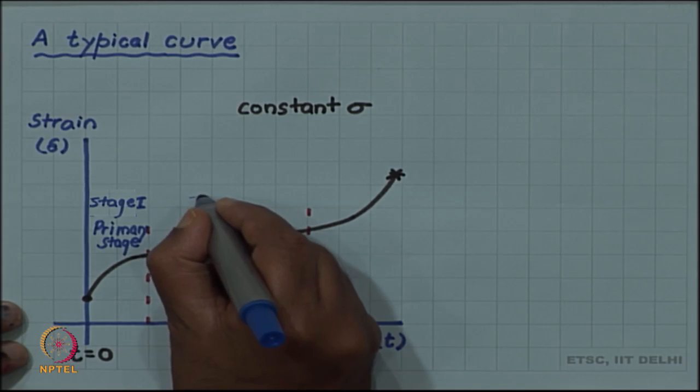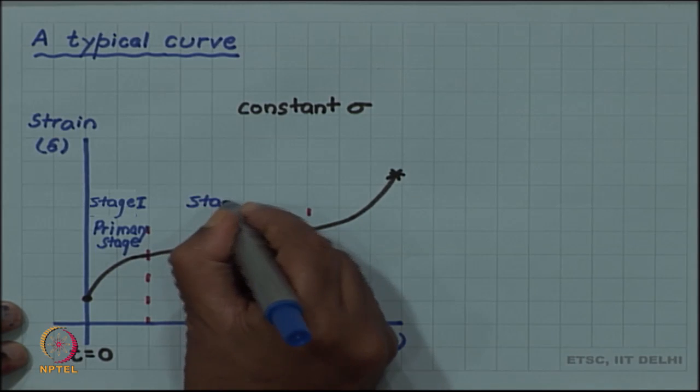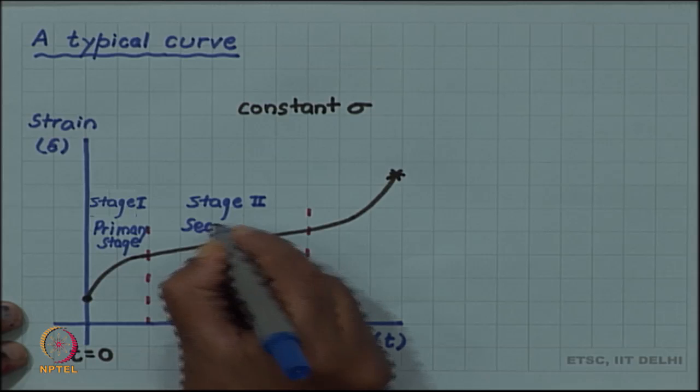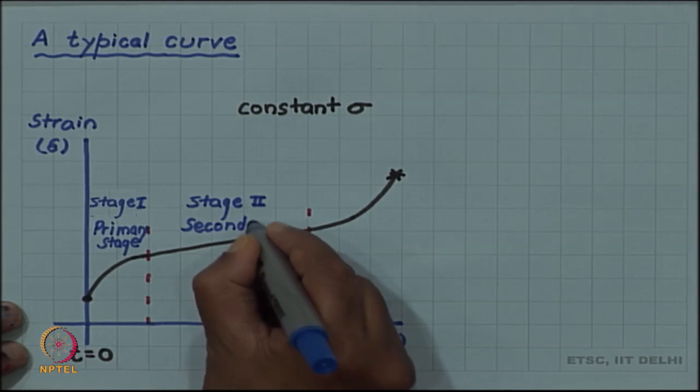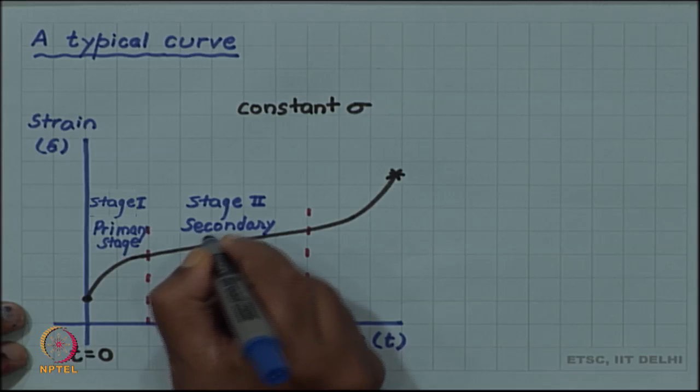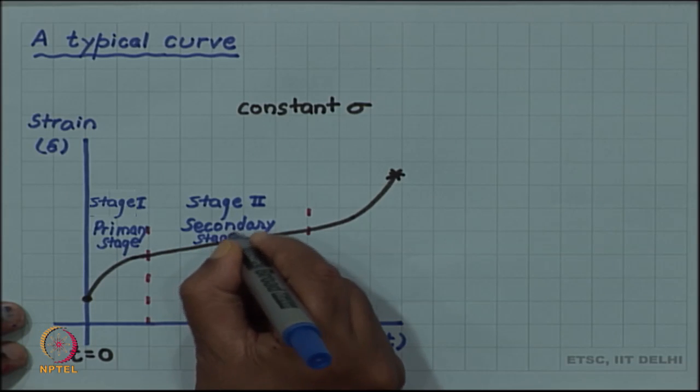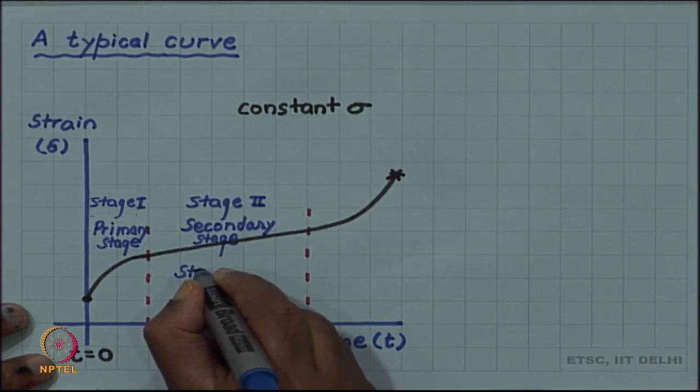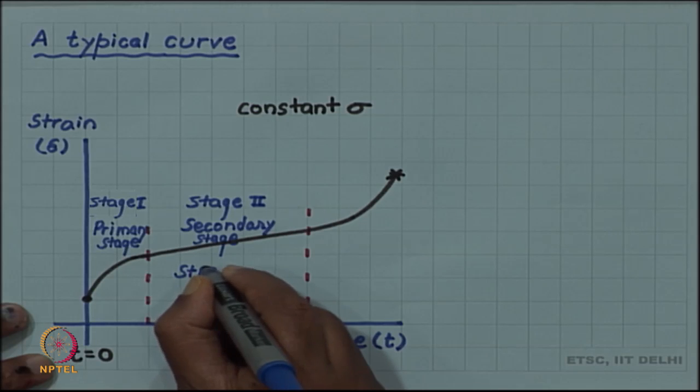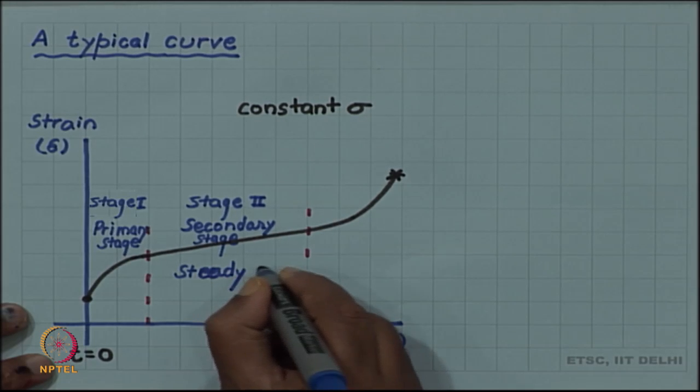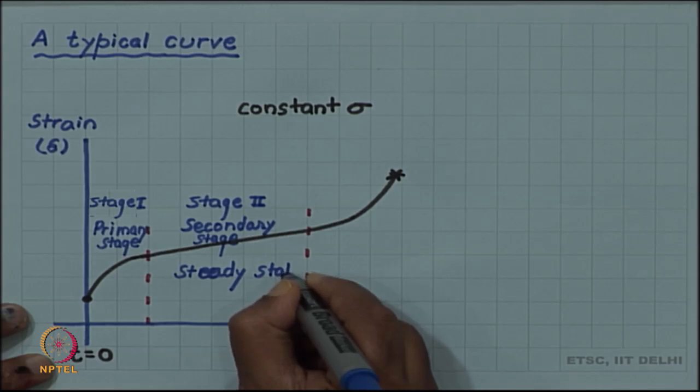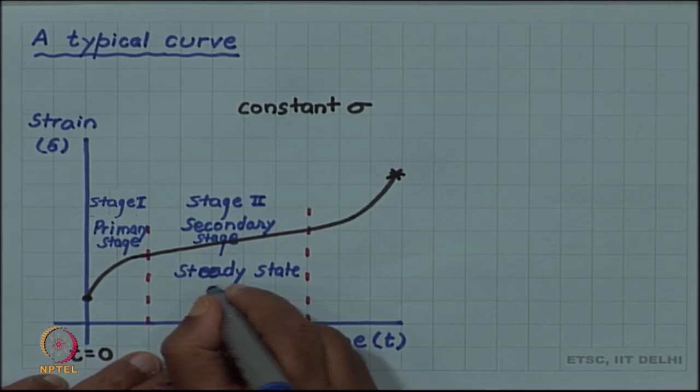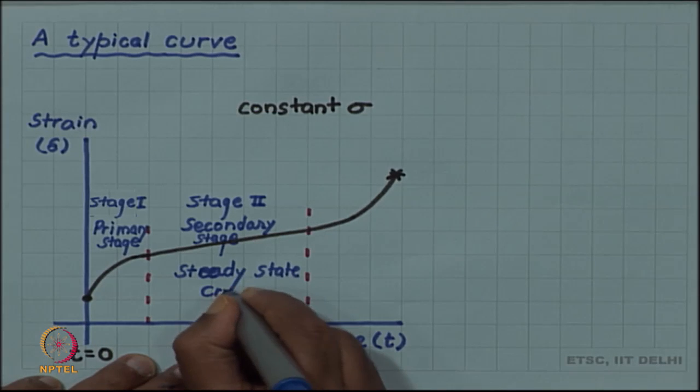Then we have stage 2, it is also called secondary creep or secondary stage. And this has one more name, because the creep rate is constant, this is also called steady state creep.